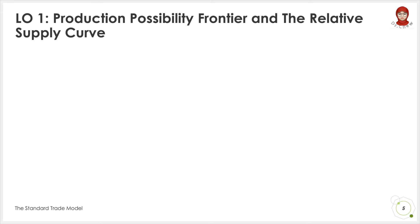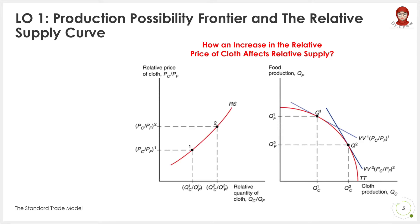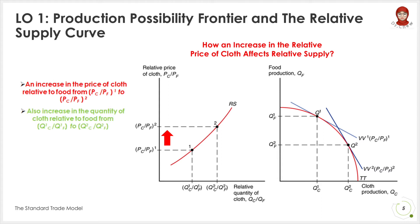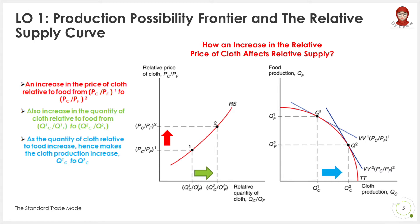We know that what a country produces depends on the relative price of clothes to food. Now we will see how an increase in the relative price of clothes affects relative supply. Suppose an increase in the price of clothes relative to food — simply said, clothes become more valuable relative to food. Hence, the increase in the relative price of clothes also increases the relative quantity of clothes, as shown in the first figure. As the relative quantity of clothes increases, the economy produces more clothes and less food, as shown in figure 2. As a result, production in the economy shifts from point 1 to point 2.